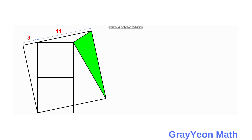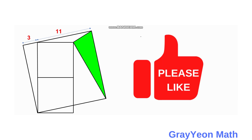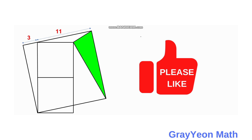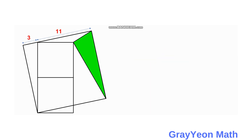Welcome to GrayonMath. In this problem, two small squares are inside a larger square, and a point on one of the two smaller squares is connected to two vertices of the larger square by lines. These two lines, together with the side of the larger square, form a triangle. We are required to find the area of the resulting triangle.